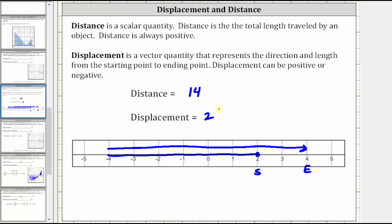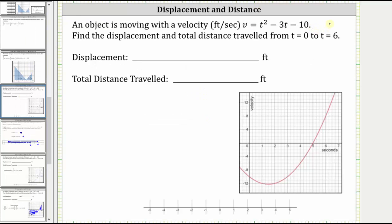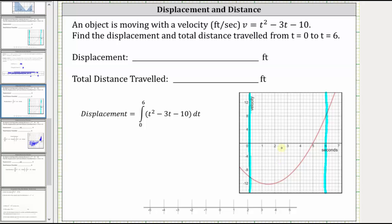Now that we have a better understanding of distance and displacement, let's go back to our problem. I've already graphed the velocity function, and we're concerned about it from t equals zero to t equals six. Notice over this interval the velocity is negative from zero to five and positive from five to six. To find the total displacement, we simply integrate the velocity function from zero to six. If the area is below the x-axis we get a negative value; if the area is above, the value is positive. So summing these signed areas gives us the displacement.